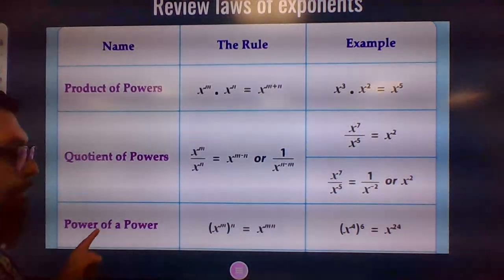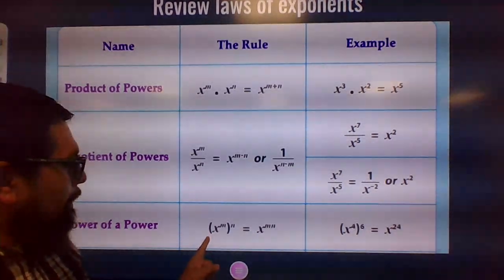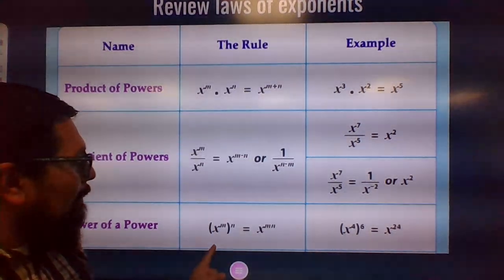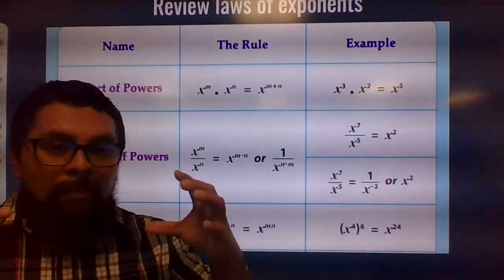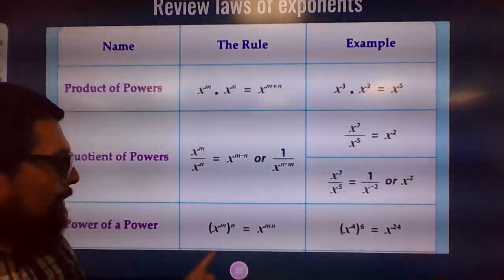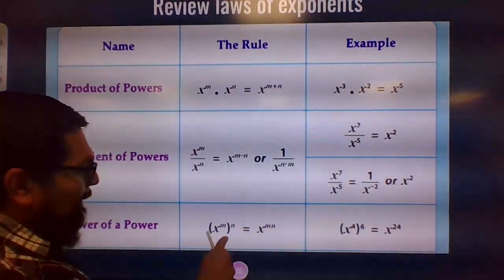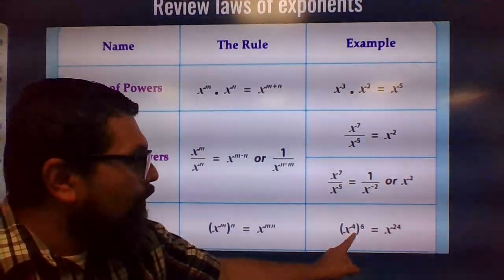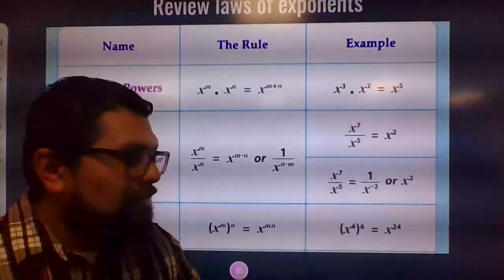And then here's the last one. The power of a power where you have a power and then another power on the outside like the dolls, remember? And then all you do is multiply the exponents here. So on this one, X to the fourth to the sixth, four times six is 24.